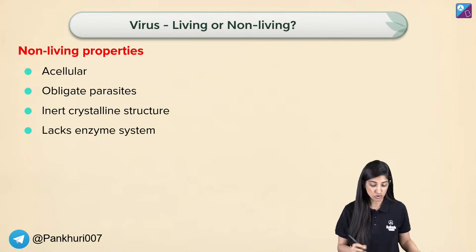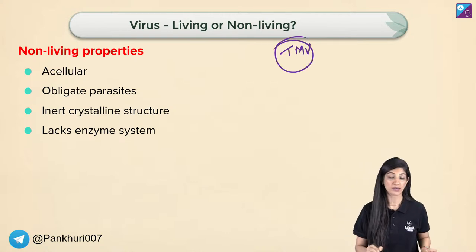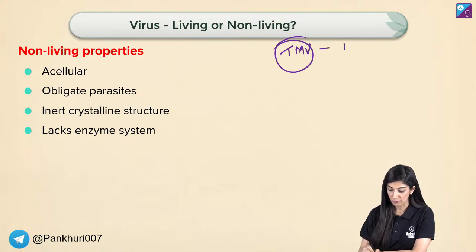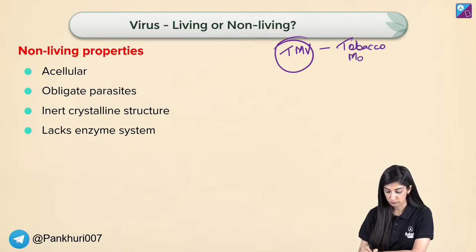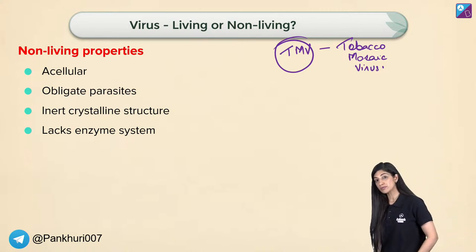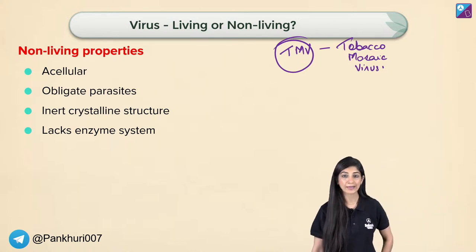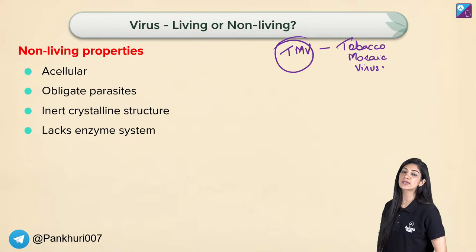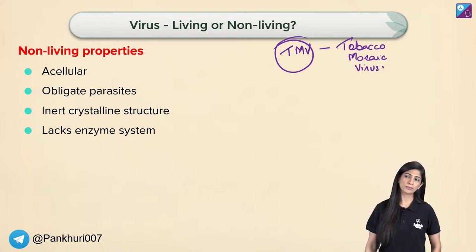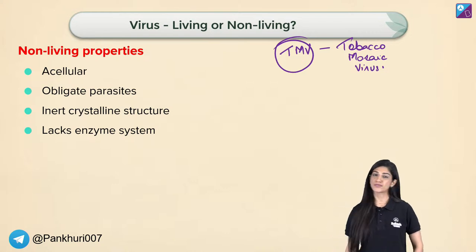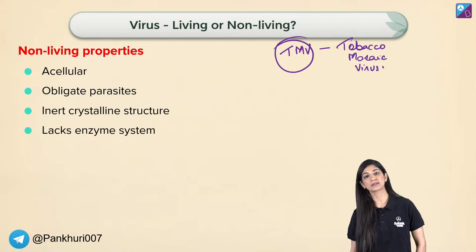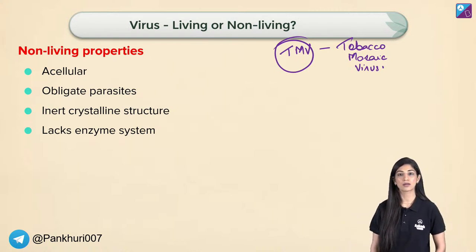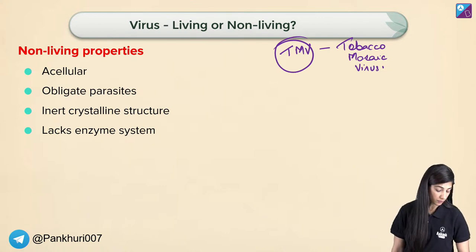Ivanovski is credited with the discovery of virus — specifically tobacco mosaic virus (TMV). TMV destroyed tobacco plants — the patches on the tobacco plant were not a fixed pattern, hence 'mosaic.' Beijerinck worked with Ivanovski and isolated this virus, telling the world it is highly contagious. He called it 'contagium vivum fluidum' — infectious living fluid.